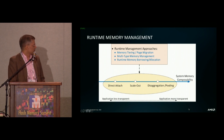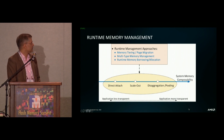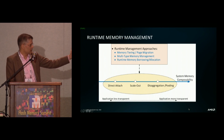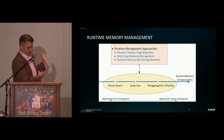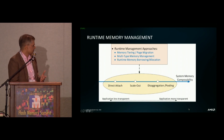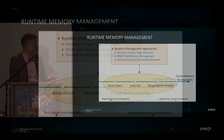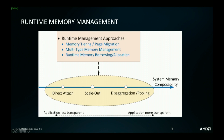Coming to runtime memory management — as I mentioned, we had direct attach, scale-out, and pooling, and that's how system memory composability increases. There are various ways of doing it: you can do memory tiering and page migration, and multi-type memory management.